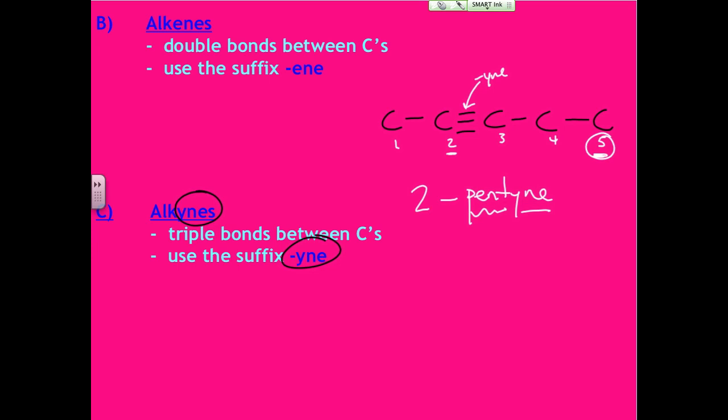In terms of ordering and numbering, you always go through the multiple bond first. That takes precedence. That's the trump as opposed to branches. So again, if I had this and I had a branch here, but I had a double here, we would number this one one, two, three, four, five. Because the double bond trumps, we want it to be after the one, rather than numbering it the other way.